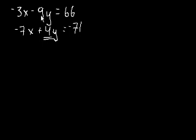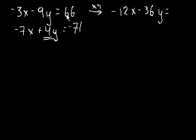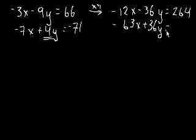So if we multiply the top equation by 4, we get, let's multiply it by 4. We'll get minus 12x minus 36y is equal to 4 times 6. So 240 plus 24 is 264. And we multiply the second equation by 9. So it's minus 63x plus 36y is equal to, let's see, that's 639. That's a big number, 639. Now we add the two equations.